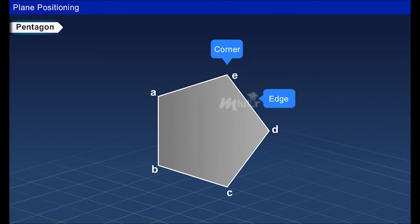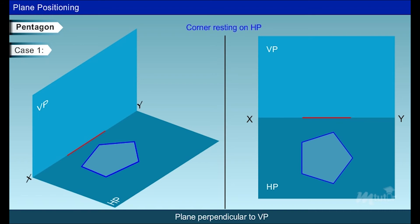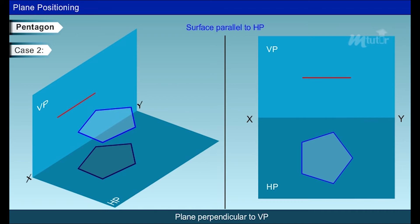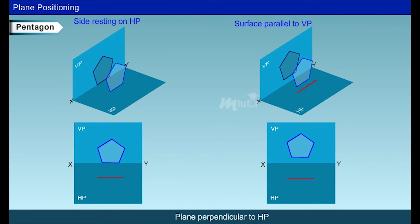The pentagon has five edges or sides with five corners. In the problem, if it is given that the pentagon is perpendicular to VP and resting on one of its corners on HP, and the surface is parallel to HP, it can be drawn as shown. When the pentagon is perpendicular to the HP, for the two cases, the pentagon can be drawn as shown.